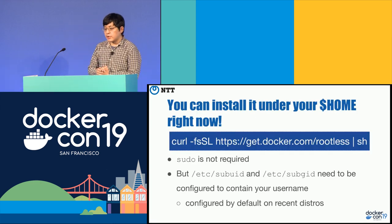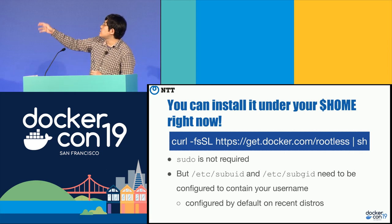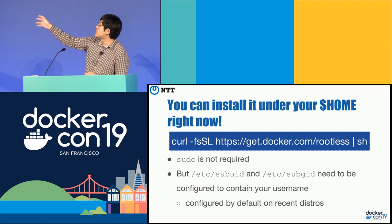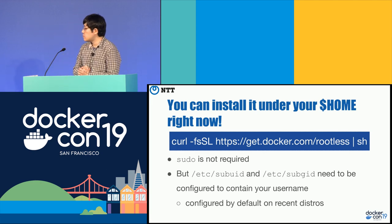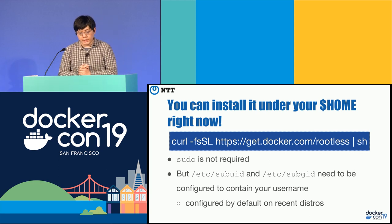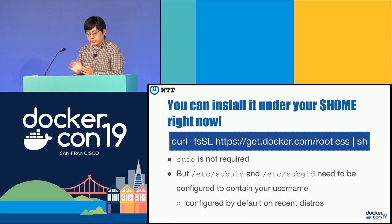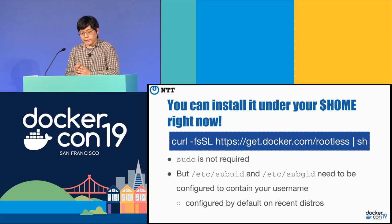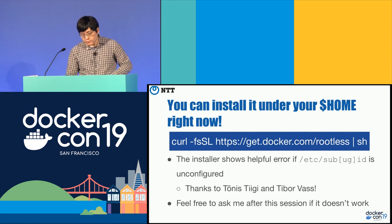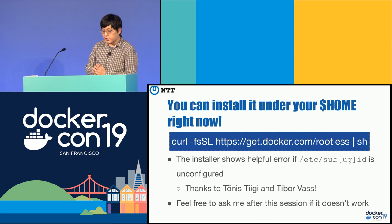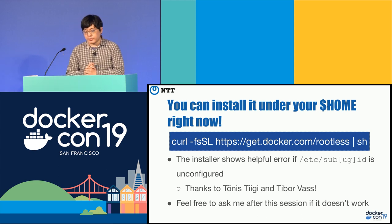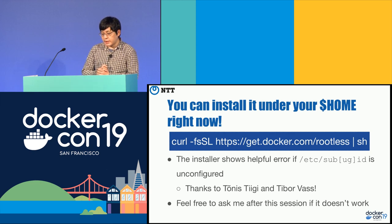You can install rootless Docker under your home directory right now using https://get.docker.com/rootless. This is a shell script, so you can directly pipe it into the shell, and of course you don't need sudo. There is one requirement: you need to have /etc/subuid and /etc/subgid files containing your username. But if you're using a recent Linux distribution, these files are automatically configured when you add a user account on the host, so you're basically already all set.